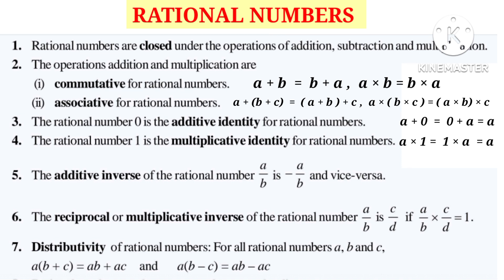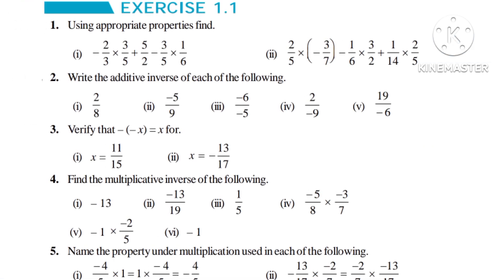Distributivity of Rational Numbers: for all rational numbers A, B and C, A into (B plus C) is equal to AB plus AC, and A into (B minus C) is equal to AB minus AC. Now let us do Exercise 1.1.